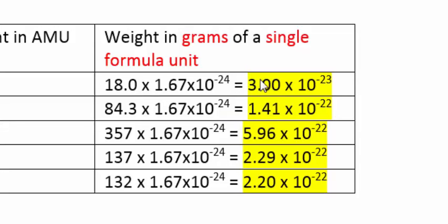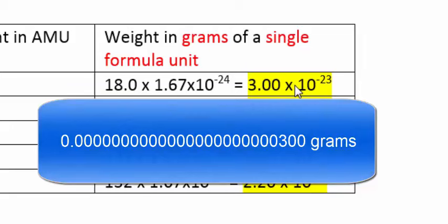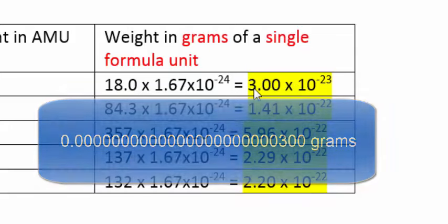You can see water, a single water molecule, is approximately 3 times 10 to the minus 23rd grams, etc. These are extremely, extremely small numbers. There's 22 zeros in front of that three.